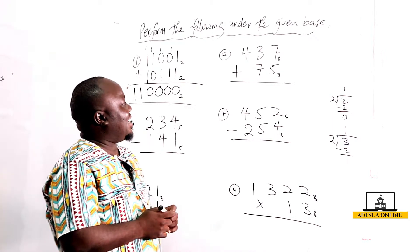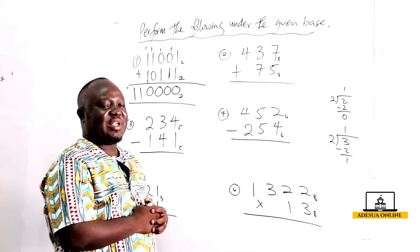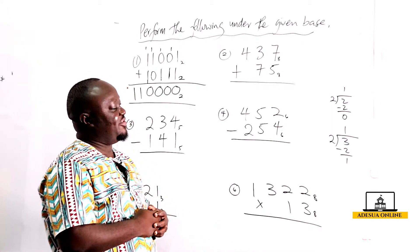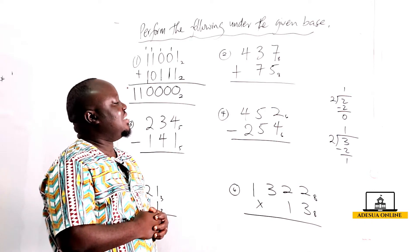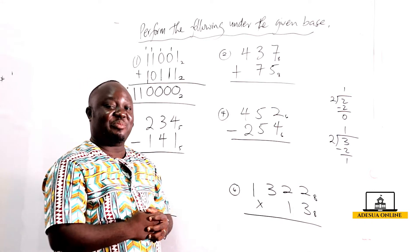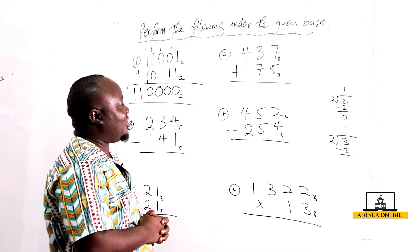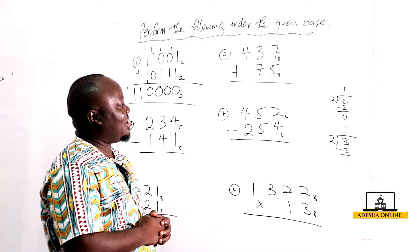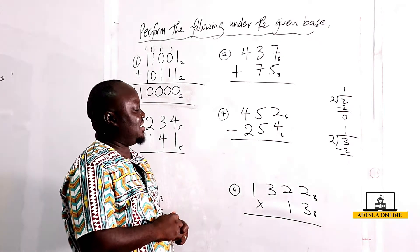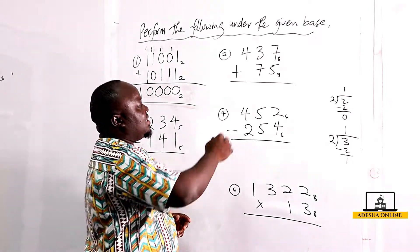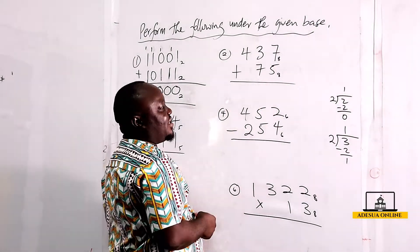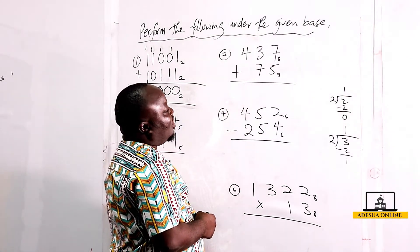Now let's come to the second one. Assuming we want to add 437 to the base eight plus 75 to the base eight — not seventy-five as a decimal, but seven five to the base eight. So seven plus five is twelve.